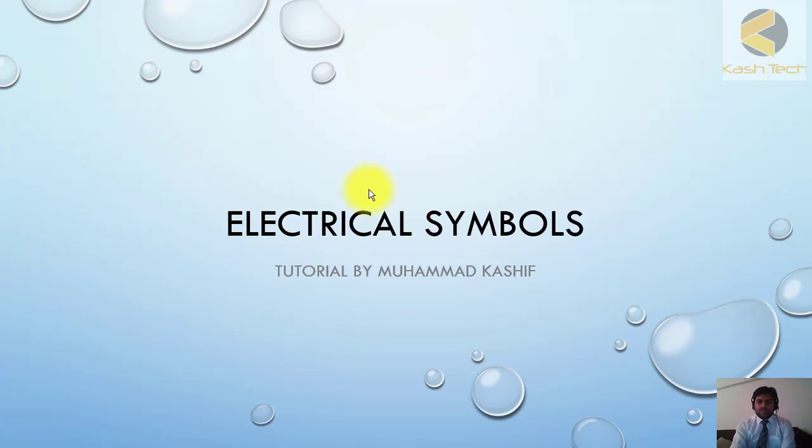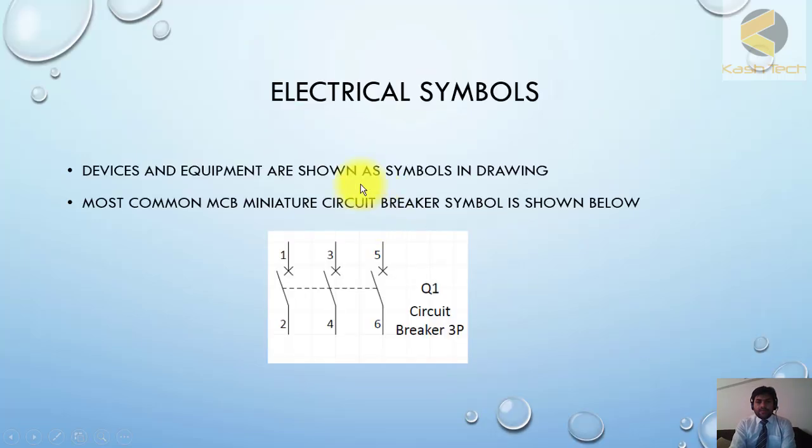For example, I have shown a very common symbol, MCB here. This is basically a three-pole MCB miniature circuit breaker. The same MCB you can find in your houses, or you can simply say breaker or circuit breakers.